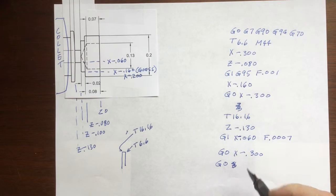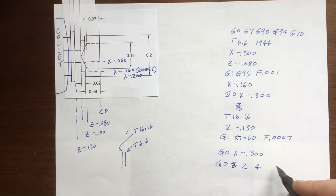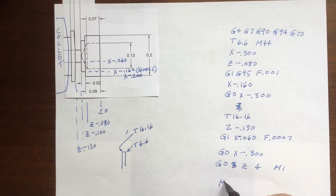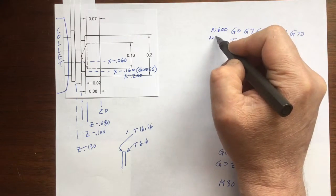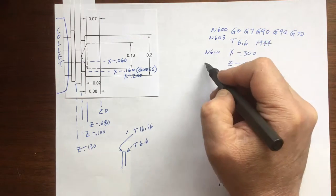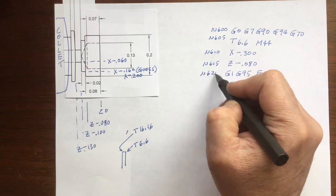I'm going to choose a Z clear position of 4 inches in front of the part so that it makes it easier to unload this piece and load the next. Here's M30 for the end of the program. Now I'm numbering the lines N600 and incrementing by 5s.